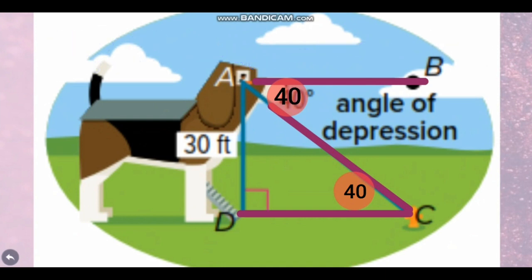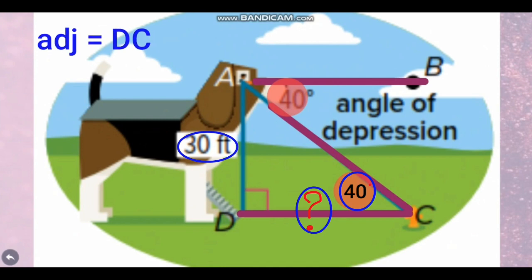Now we need to find a relation between the side DC and the angle 40 that we have and the opposite side 30. Of course, DC is the adjacent side to the angle C and the opposite side is 30. So the relation between the three of them is the tan C, that is opposite over adjacent.